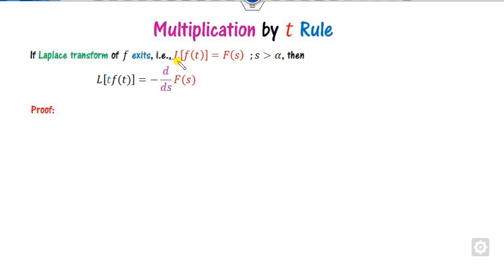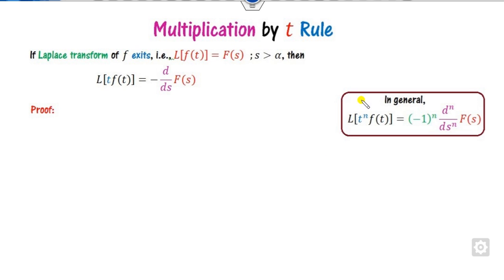If you have the Laplace transformation of the function f(t), which is denoted as F(s), then if you multiply this function f(t) by t — or in general by t raised to power n — then it will be the nth derivative of F(s) multiplied by (-1) raised to power n.